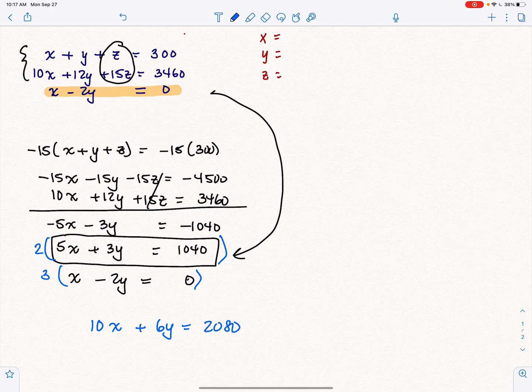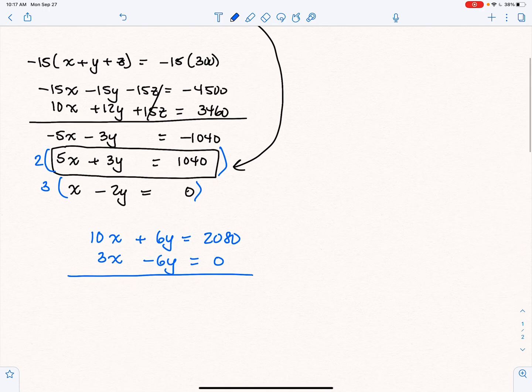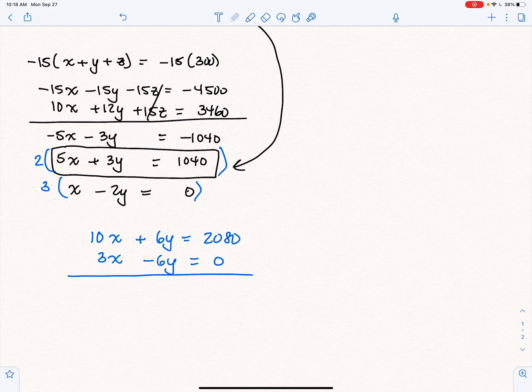So multiplying everything by 2, we get that. And multiplying the second one by 3, we get that. And then we're going to add those together because that was the whole reason why we did this. Right effect, but wrong way to do it. I wanted to cross those out.